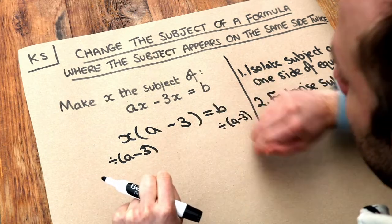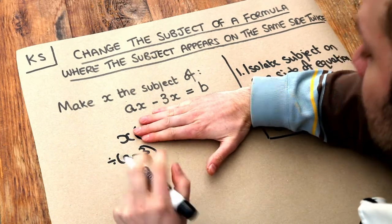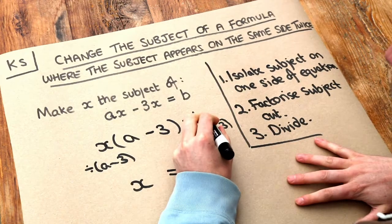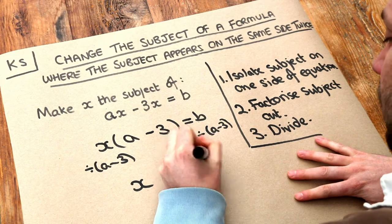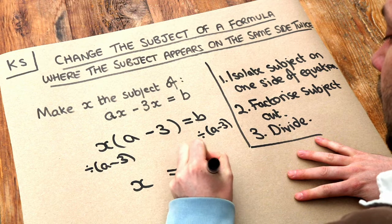So the left-hand side, if we divide by a minus 3, it gets rid of the times by a minus 3, leaving x. And the right-hand side, we divide that b by a minus 3, so it's b over a minus 3.